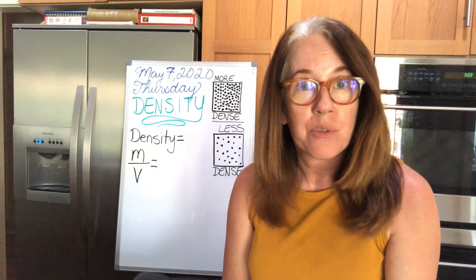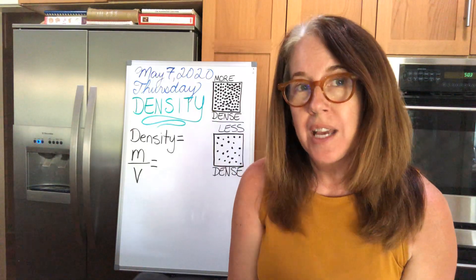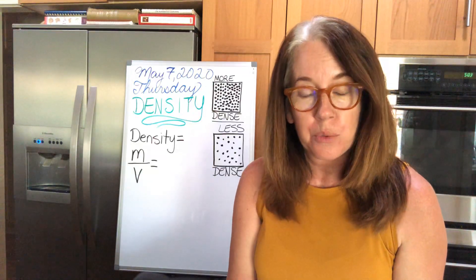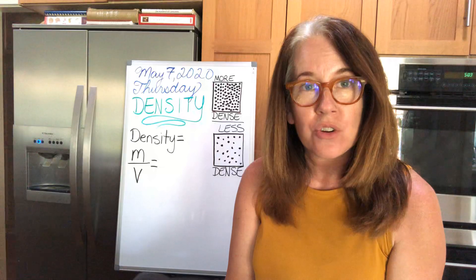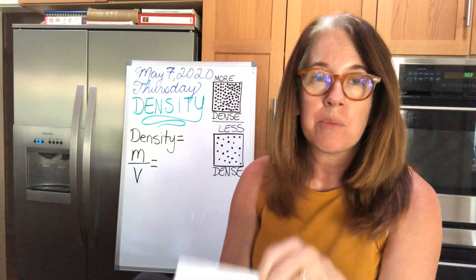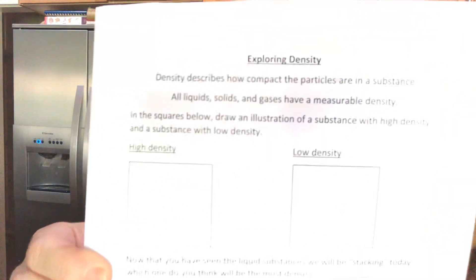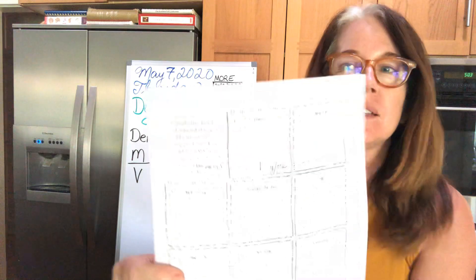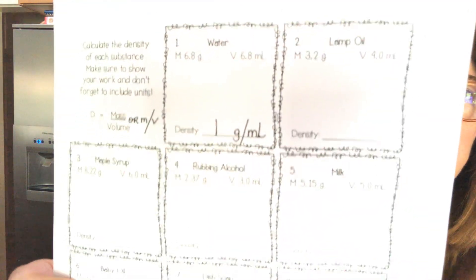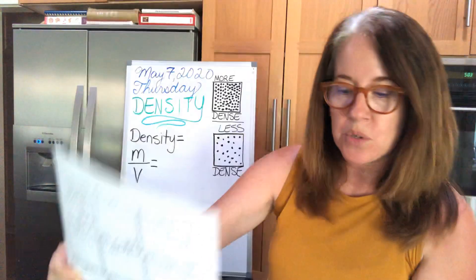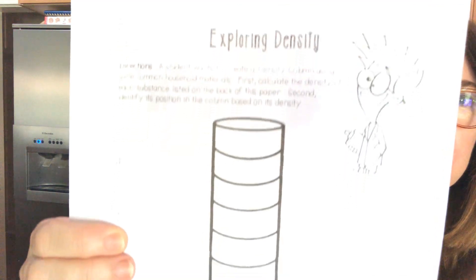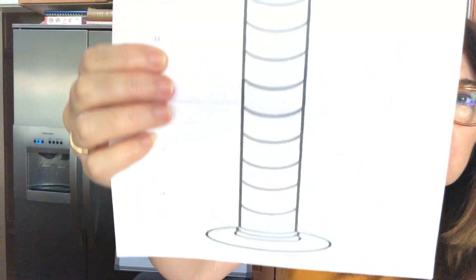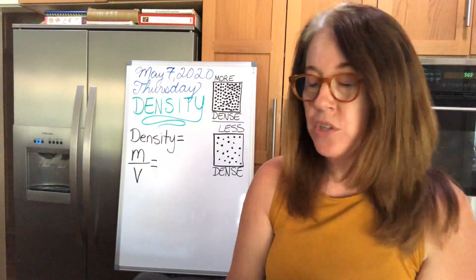Before we start today, there are three things that you're going to need. If you read the directions on Edlio, you already should have printed out three papers or set up your science journal to look like these if you can't print. The first one is called Exploring Density and has two squares at the top. The second one has a whole bunch of squares with the names of different liquids at the top of each square. And the last one is also called Exploring Density and has a large tall cylinder with 11 segments to it.